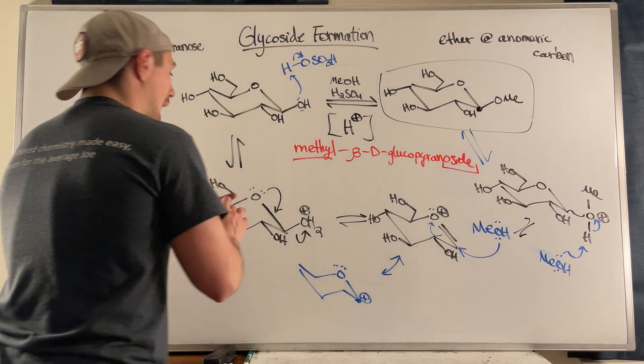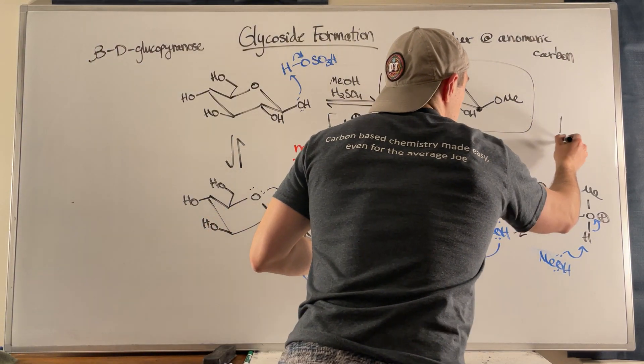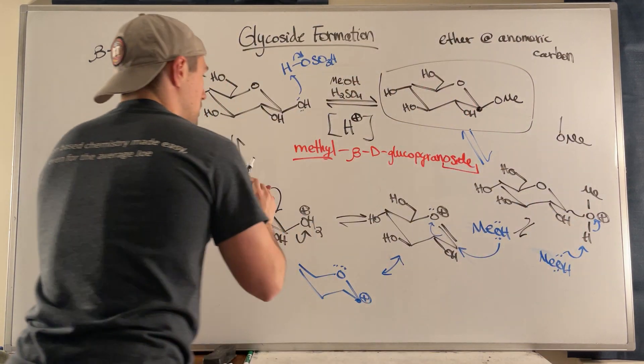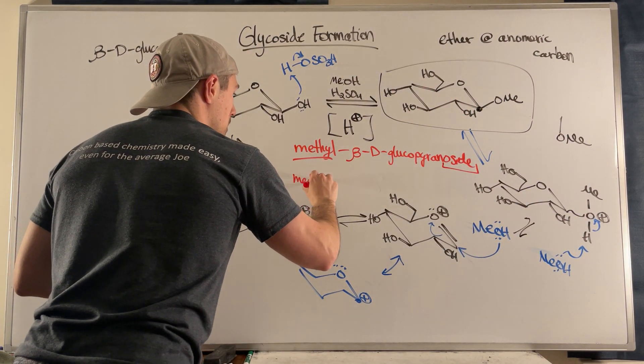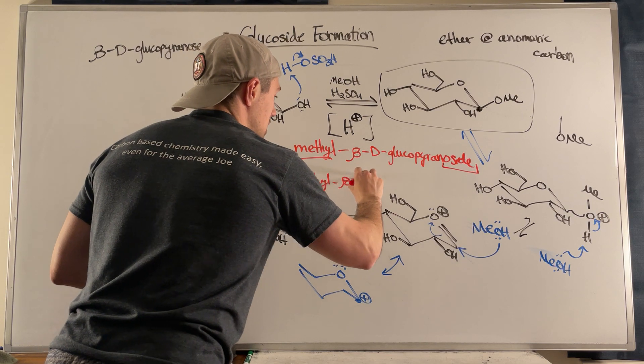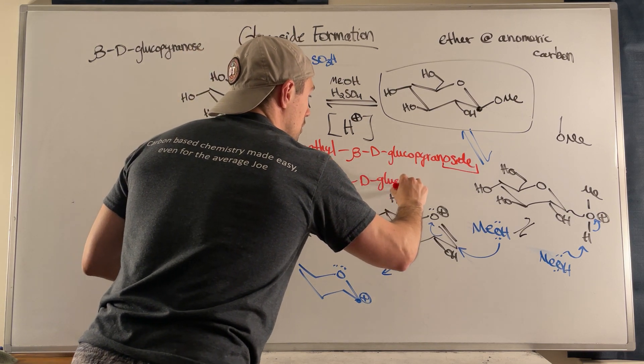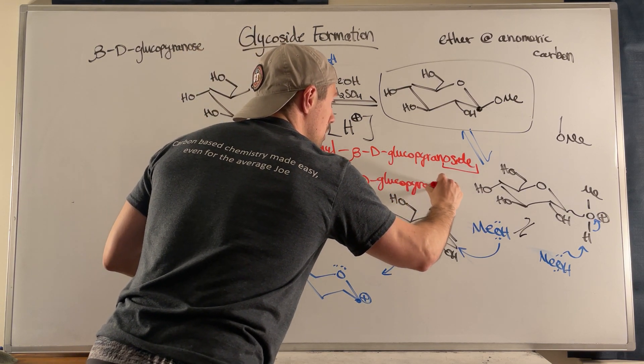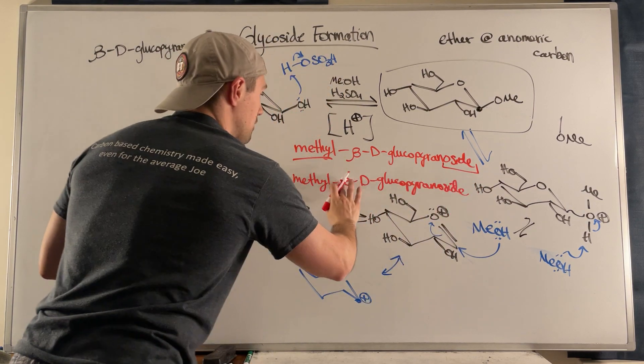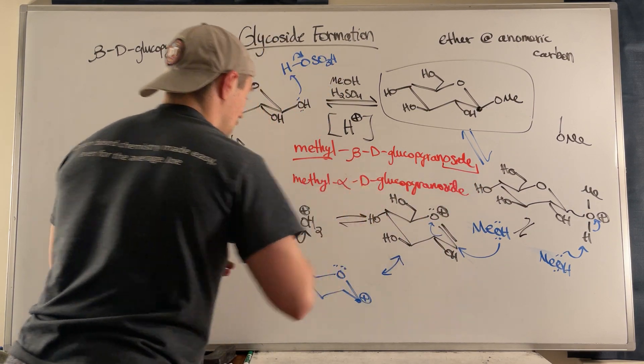And if it happened to be alpha, right, if we had, you know, this instead, then it would be methyl-beta-D-glucopyranoside. And I put beta twice, alpha, okay?